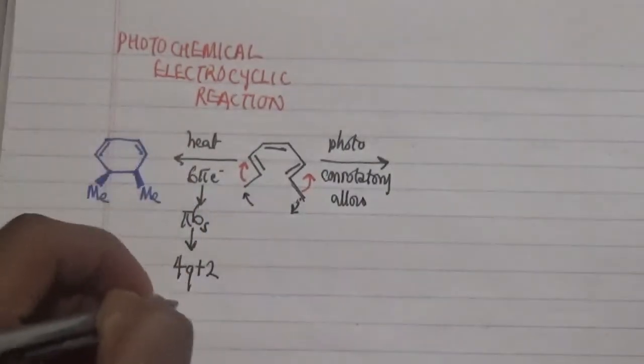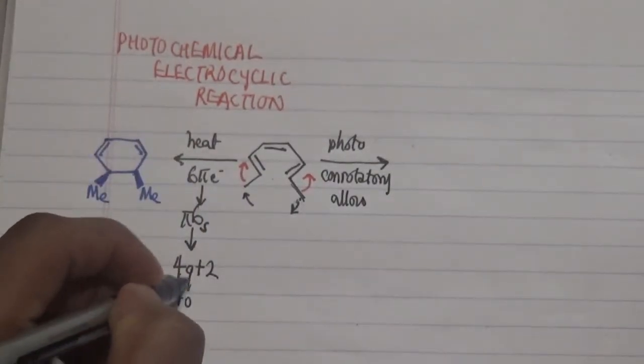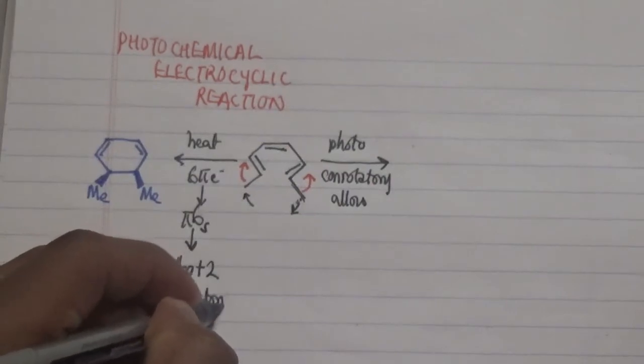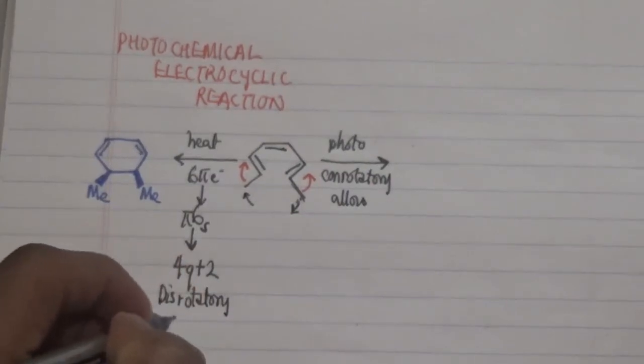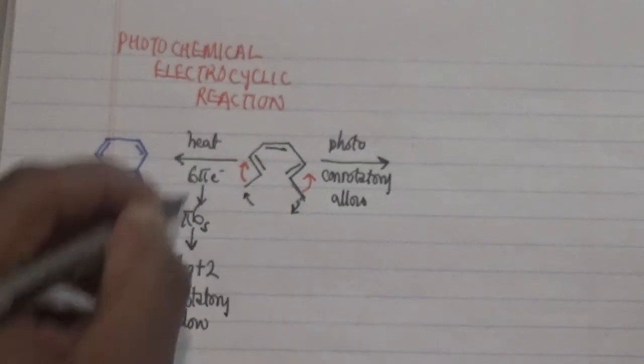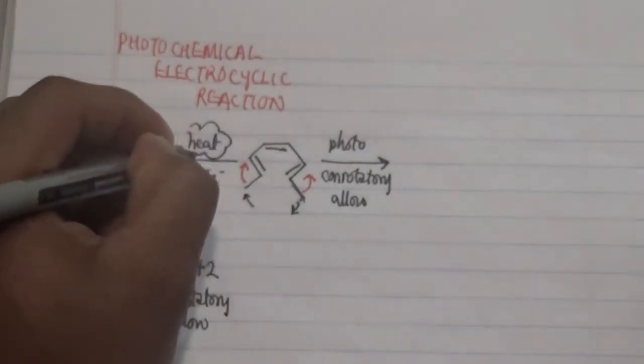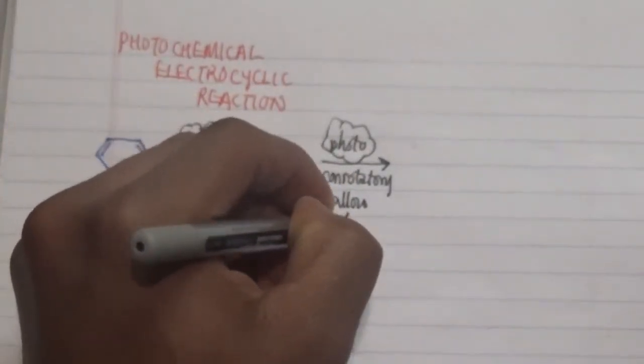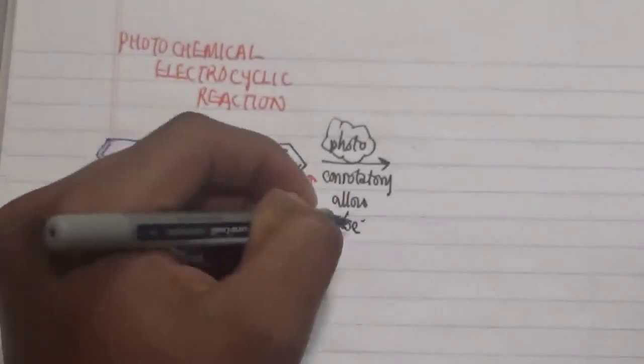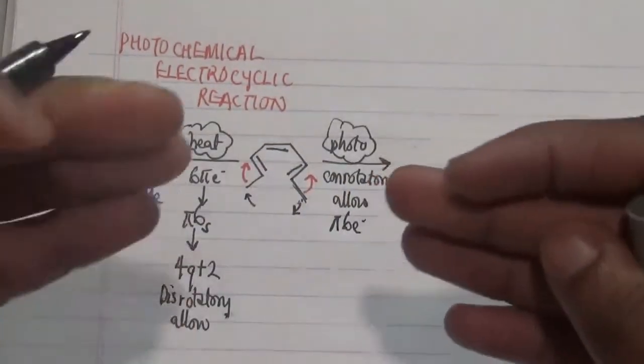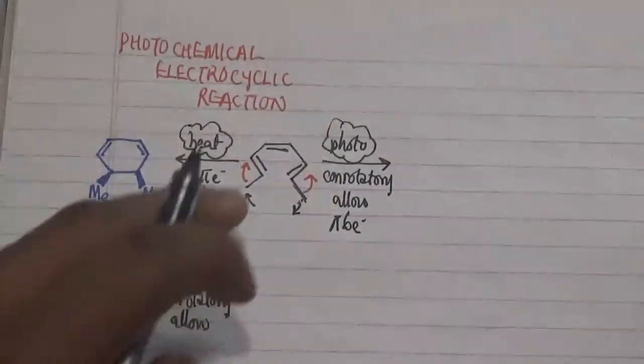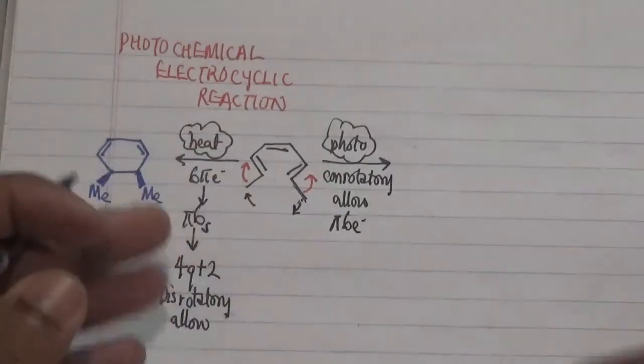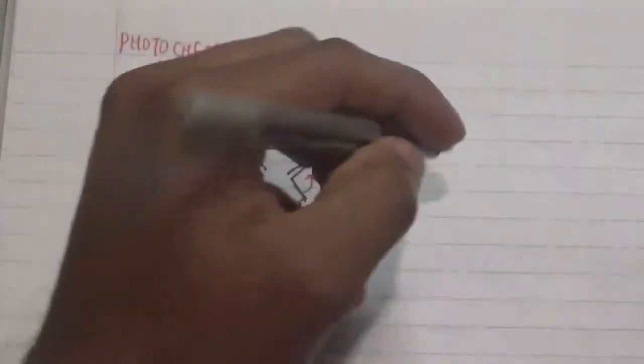On the other side, this over here is a disrotatory process that is actually allowed thermally, while this is allowed photochemically. Despite the fact that we have our 6 pi electrons, something quite interesting is happening in the molecular orbitals in here and that we are going to focus on in our next part in this video.